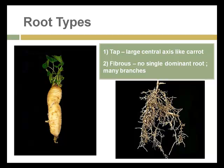Two main root types are tap roots, which extend directly deep into the ground and are commonly fleshy structures, and fibrous roots, which have no single dominant root but many branches reaching out to access water and nutrients. Tap roots extend deep into the soil; fibrous roots may also extend deep but are more likely to spread across the soil rather than down. These are two different strategies plants use with their rooting systems to compete.